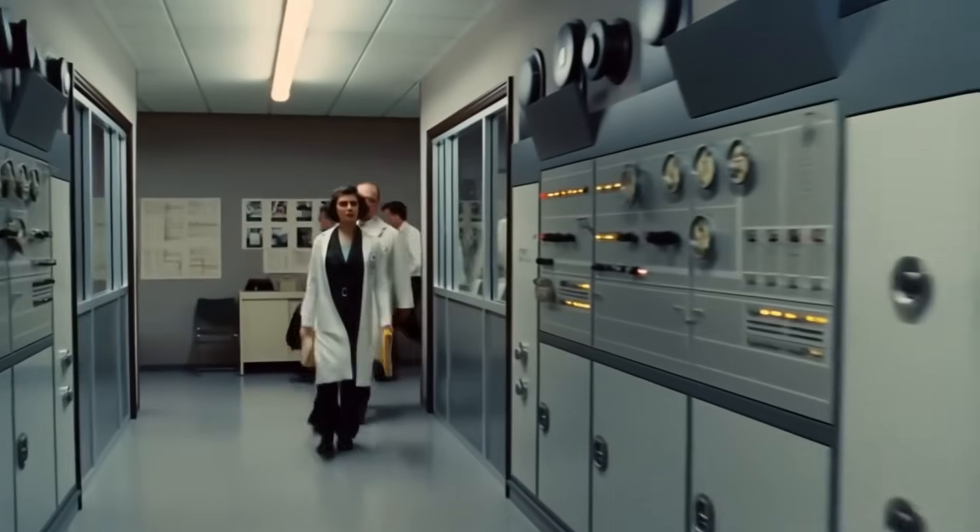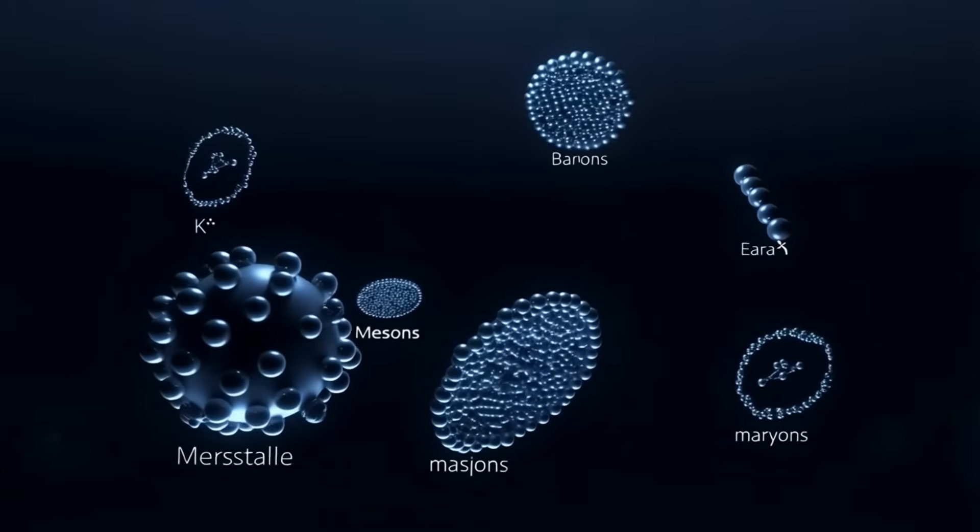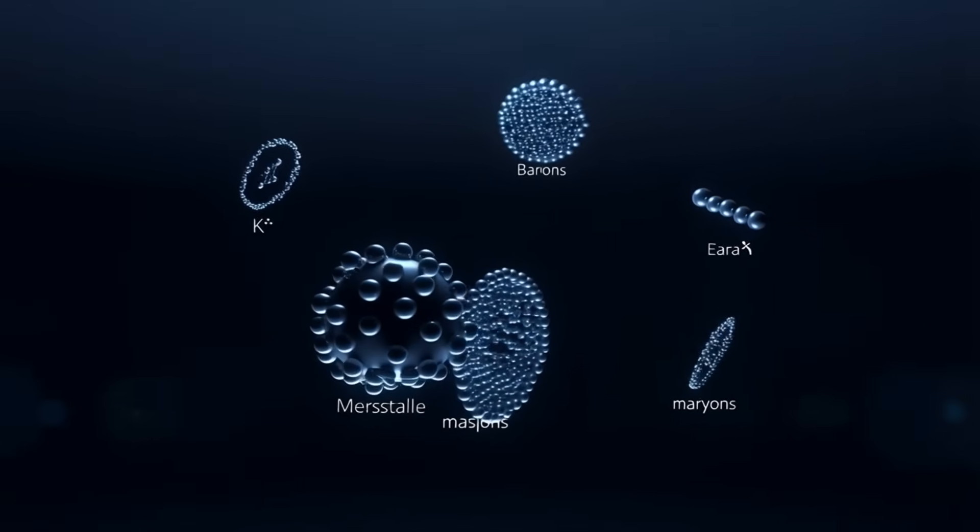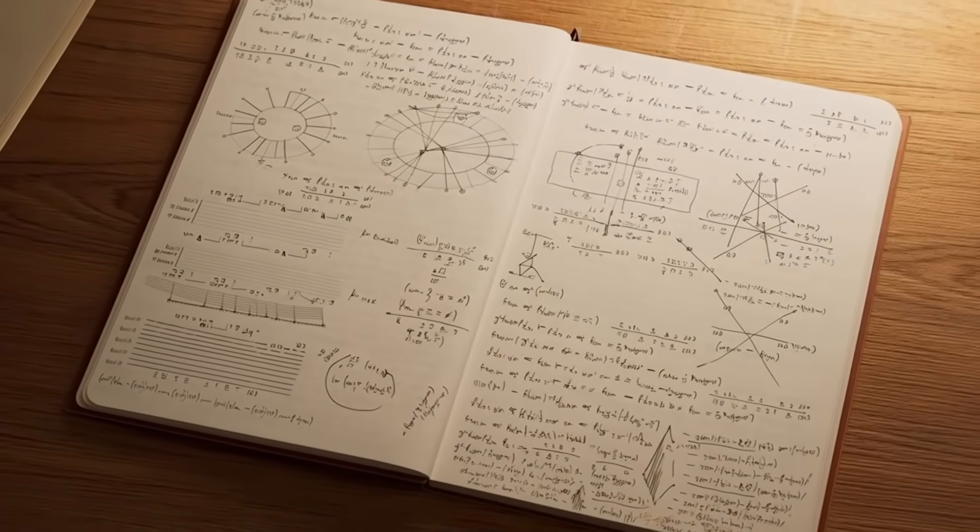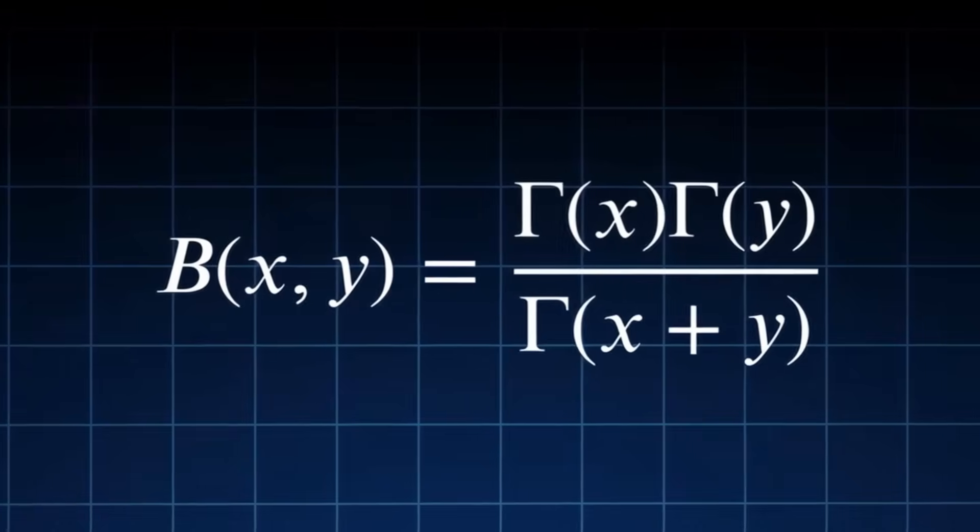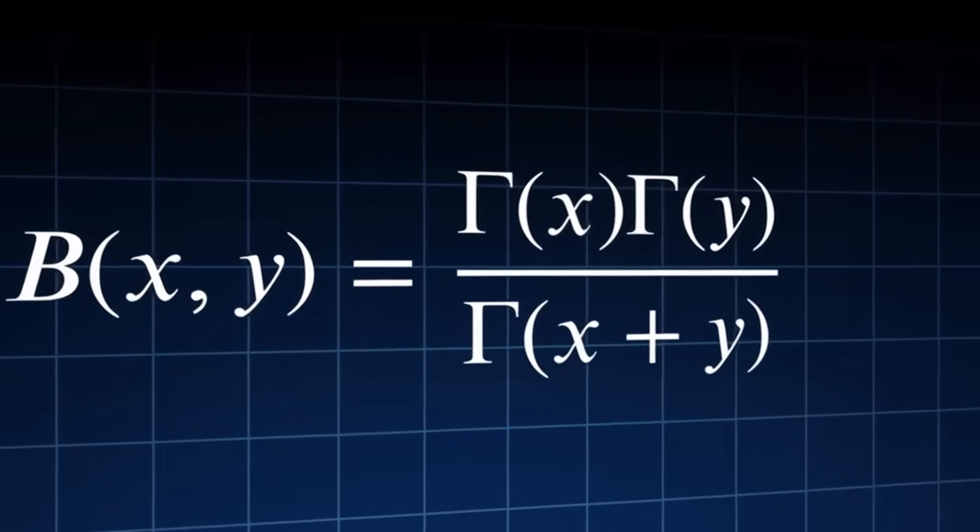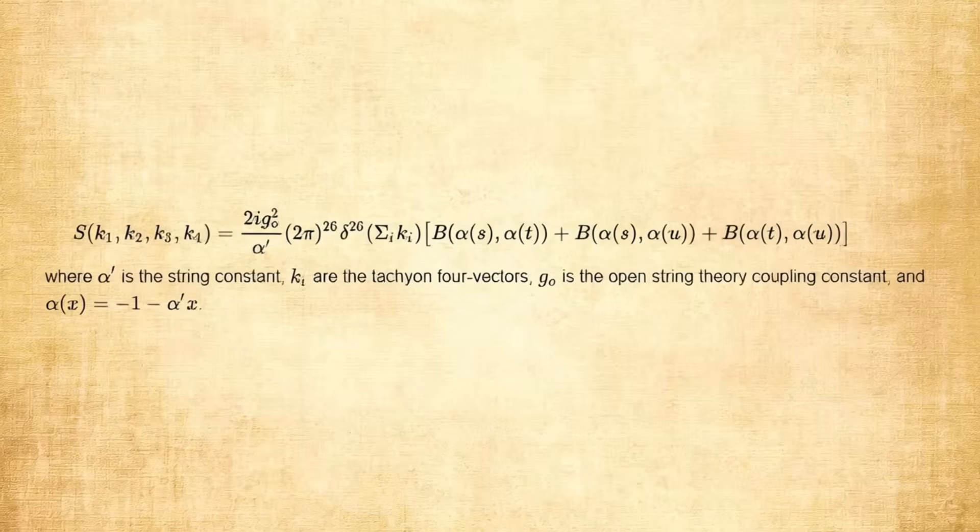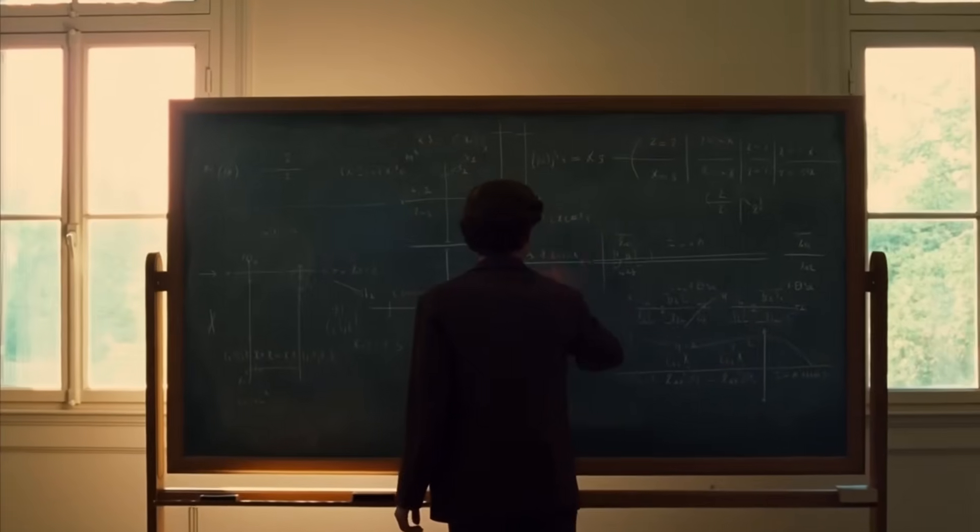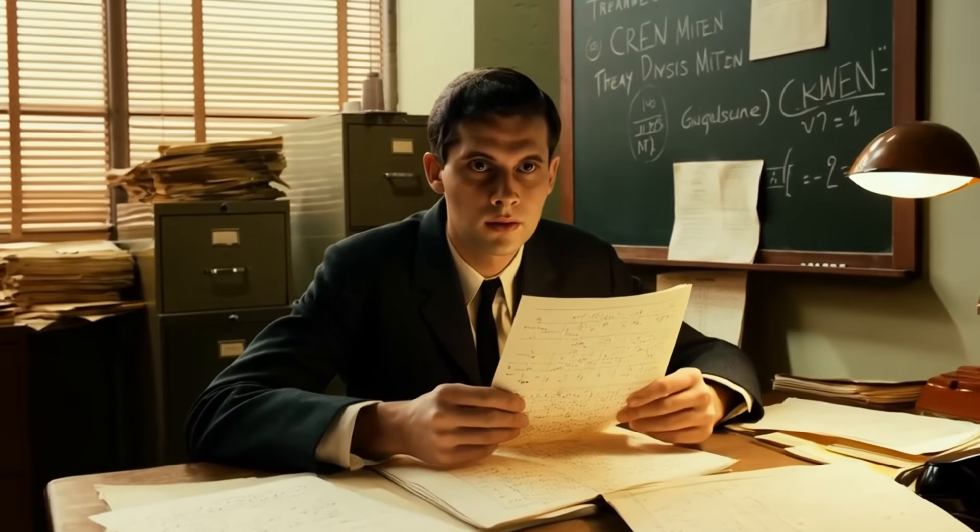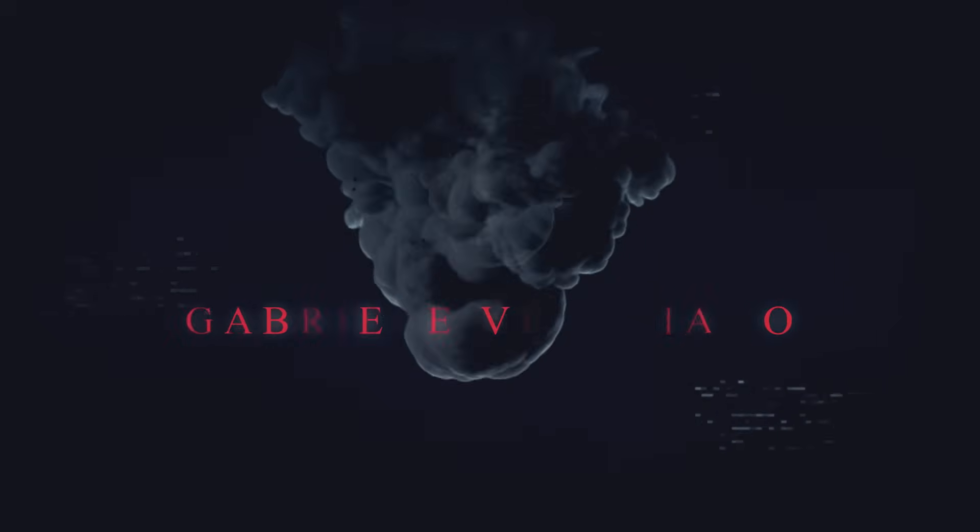In the late 1960s, physics was in crisis. Hundreds of particles, no structure, no logic, just chaos. And then a young physicist scribbled three innocent lines of mathematics. A formula from the 1700s that perfectly described the strongest force in nature. A formula no one expected and no one understood. He wasn't trying to rewrite physics, but he did. This is the story of the accident that reshaped the universe and the physicist whose insight breathed life into the first string.